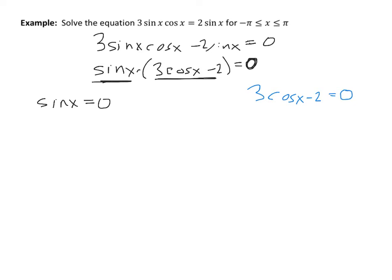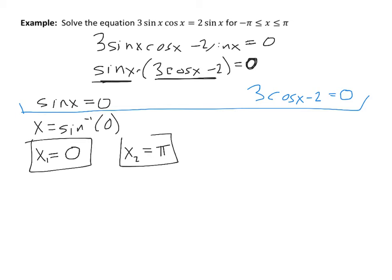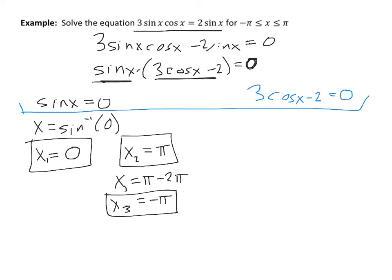Using the zero product property, either sine x equals 0, or 3 cosine x minus 2 equals 0. That's all the new content here — move to one side, factor, set each factor equal to zero. For sine x equals 0: inverse sine of 0 gives x equals 0, and the secondary solution is π minus 0, which is π. Checking further, π minus 2π gives negative π, which is also on the interval. So those are three solutions.